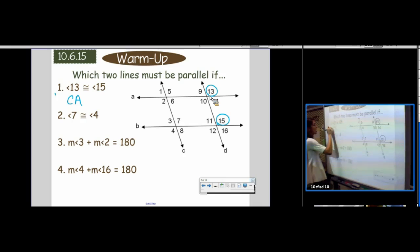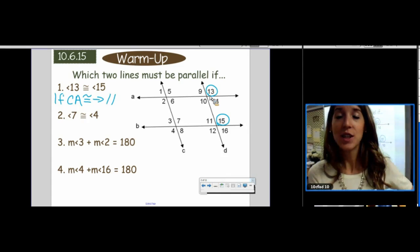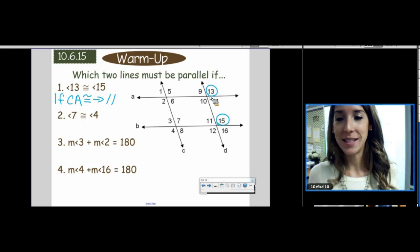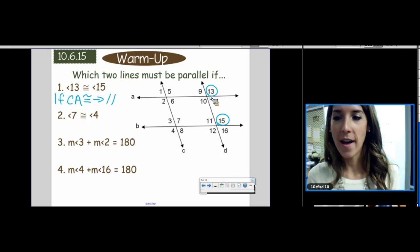And we know that if corresponding angles are congruent, then our lines are parallel. Well, angle 13 is congruent to angle 15, so the corresponding angles are doing what the theorem says to do. Therefore, we have parallel lines.